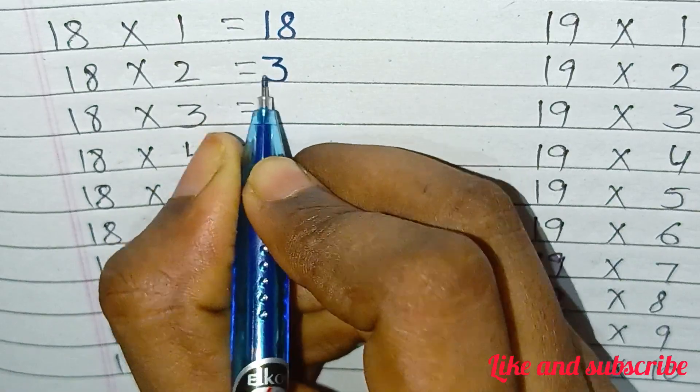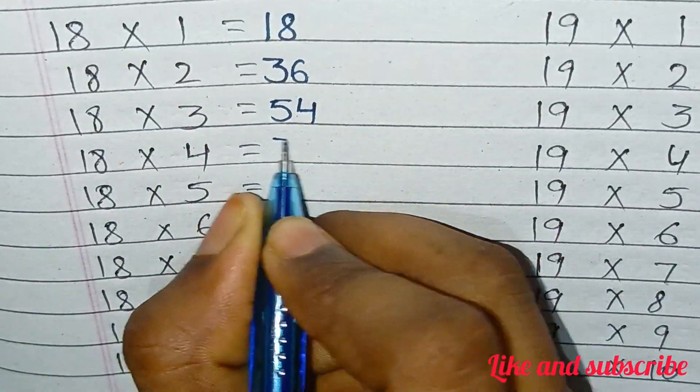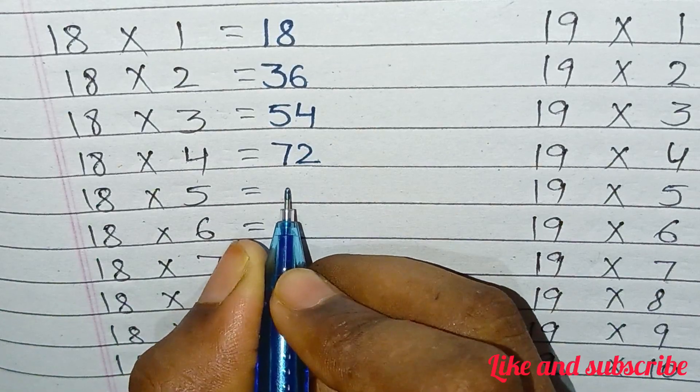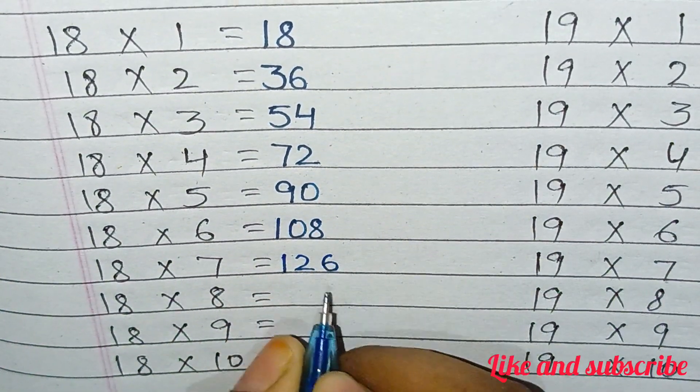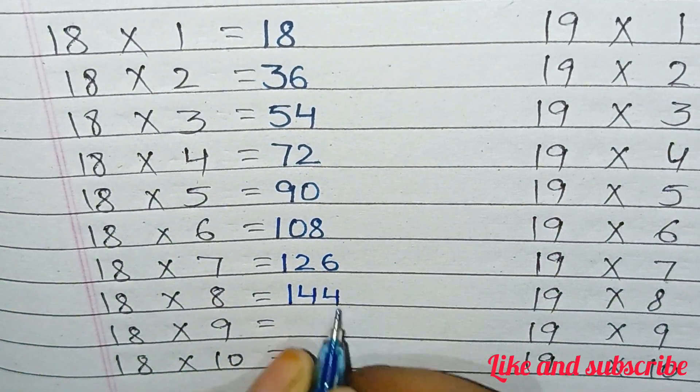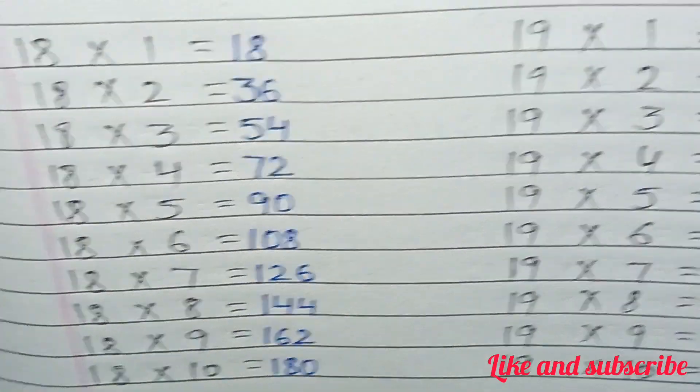18×1=18, 18×2=36, 18×3=54, 18×4=72, 18×5=90, 18×6=108, 18×7=126, 18×8=144, 18×9=162, 18×10=180.